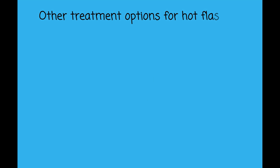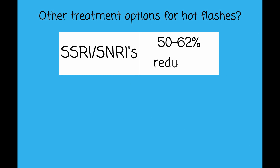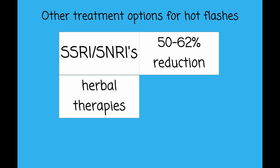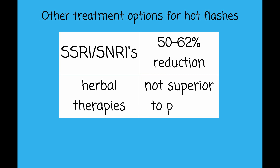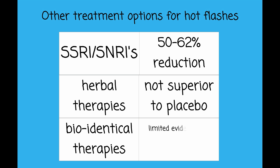What other options are available for treatment of hot flashes? SSRIs and SNRIs are effective treatments and reduce hot flashes by around 50 to 62 percent. Herbal therapies such as black cohosh or phytoestrogens have not been shown to be superior to placebo. Bioidentical hormones are not recommended over conventional hormone therapy, as there is limited evidence on their safety, purity, potency, and efficacy.